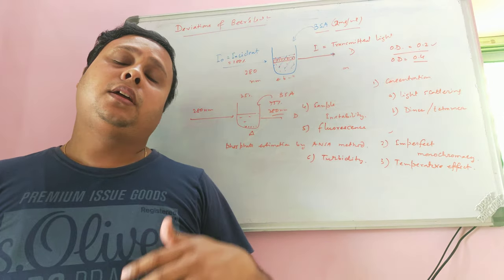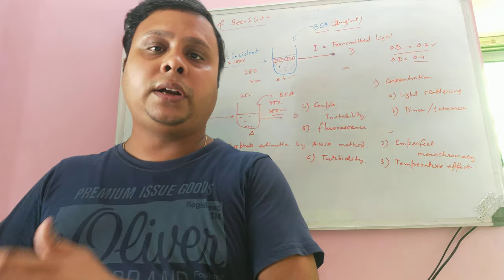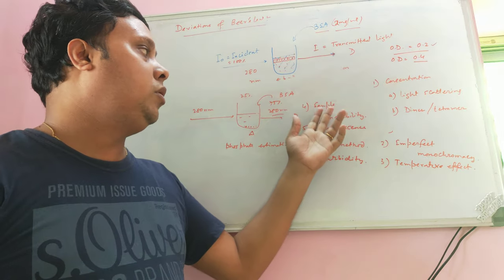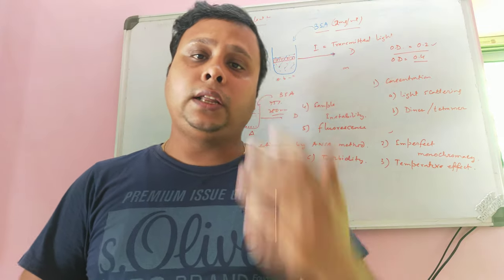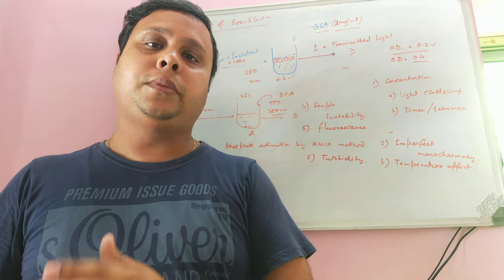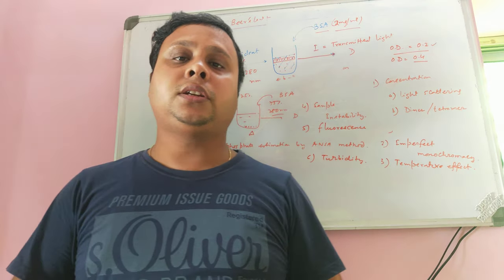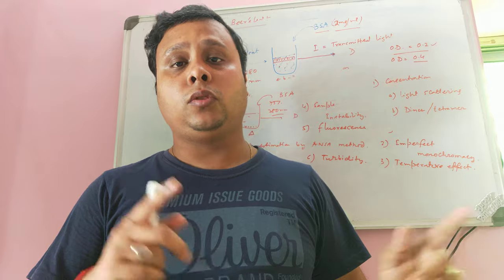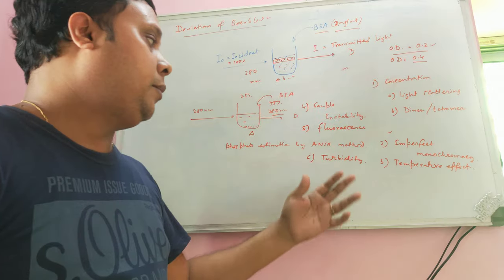Fourth, sample instability — after color development in unstable complexes such as in the ANSA phosphate method, you must immediately take the OD reading. Fifth, fluorescence — fluorescent molecules absorb at one wavelength and emit at a longer wavelength, causing the detector to receive two different wavelengths and giving an incorrect OD. Sixth, turbidity — turbid solutions absorb more than native solutions due to additional particles such as microbial metabolic waste products.